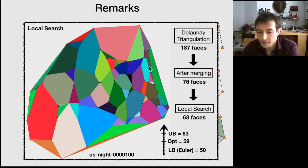Going back at our example here, we had an upper bound of 63. The optimum solution is 59. And the lower bound produced by Euler's formula would be 50. So we are still left with a gap here.